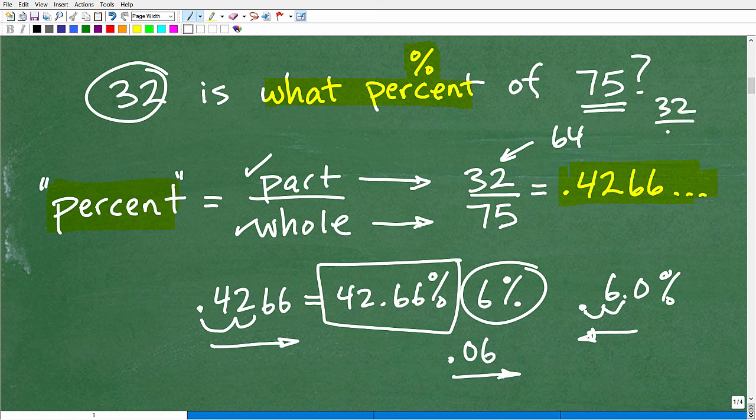So 32 out of 64, that's a fraction that's equivalent to one half or 50%. So this denominator, 75, is bigger than 64, so this is not going to be quite 50%, but 42.66% seems reasonable.